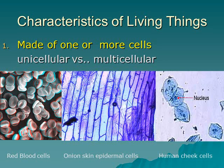When we talk about living things being made of cells, they can be unicellular or multicellular. Uni, like uno in Spanish, means one — like a unicycle has one wheel. Unicellular organisms consist of just one cell; examples include all bacteria and some single-celled fungi such as yeast, which we use to make bread. Multicellular organisms, on the other hand, are made of multiple cells — humans, for example, are made of many, many cells.